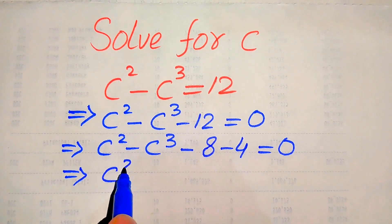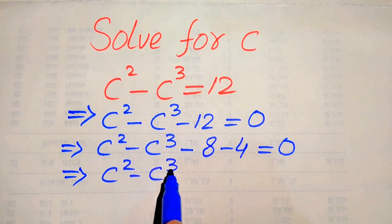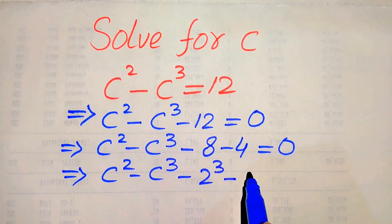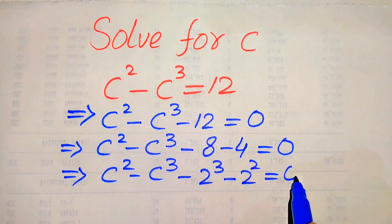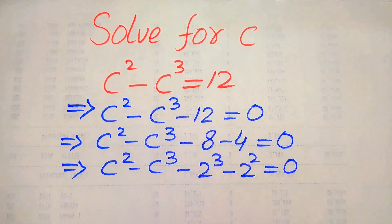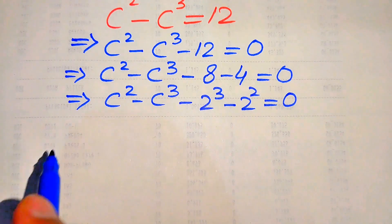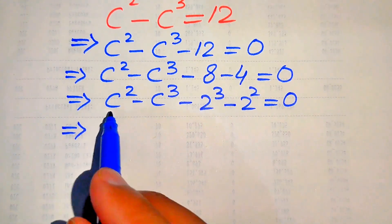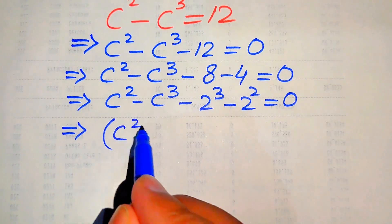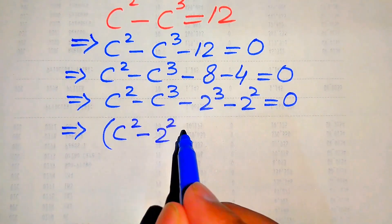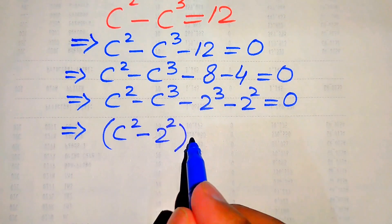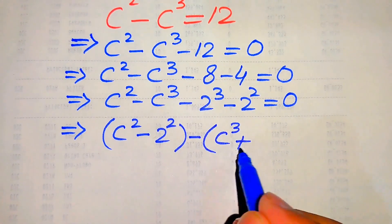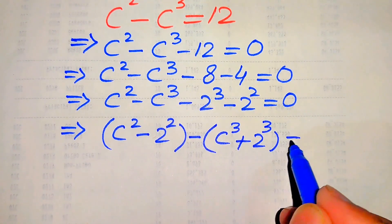We rewrite 8 and 4 in cube and square form: c squared minus c cubed minus 2 cubed minus 2 squared equals 0. Now we need to pair the cubic term with the cubic term and the square term with the square term, giving us c squared minus 2 squared, minus (c cubed plus 2 cubed), equals 0.